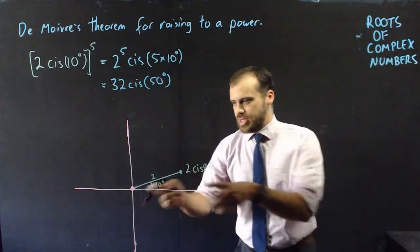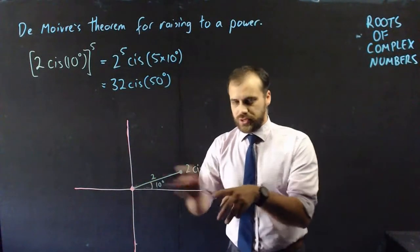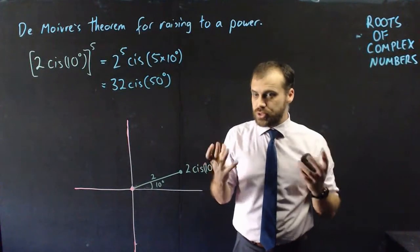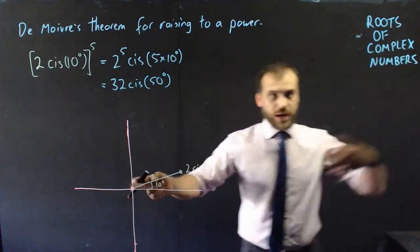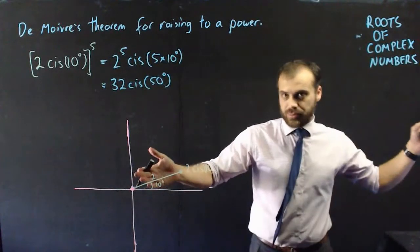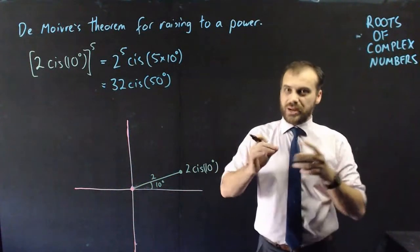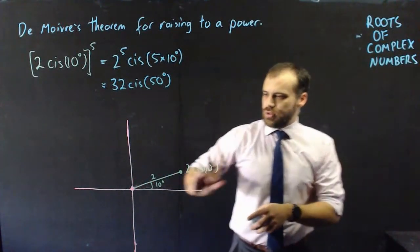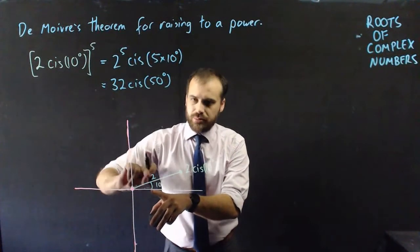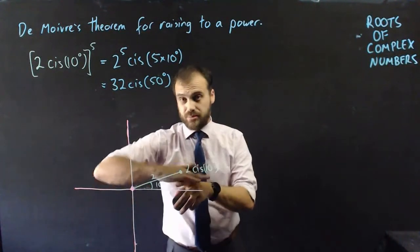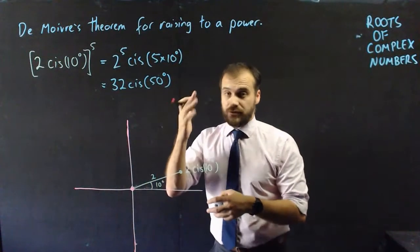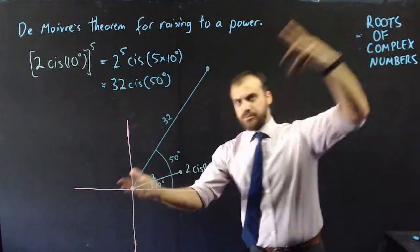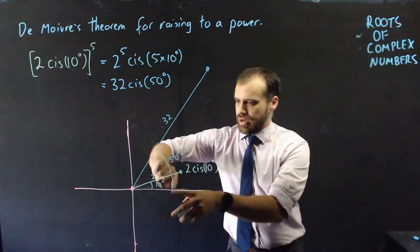This is 2 cis 10, something with a length of 2, angle of 10 degrees from the positive direction of the x-axis. When we raise it to the power of 5, we're doing two things. We're taking the length and raising it to the power of 5, scaling it up 2, 4, 8, 16, 32. So we get a much larger modulus. The other thing that we do is take that angle and multiply it by 5. We rotate it by some amount. In this case, 5 times 10 is 50 degrees. Obviously this isn't drawn to scale. That's 2, that's 32, it should be much longer.